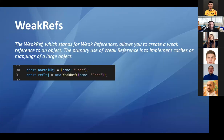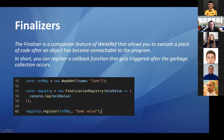FinalizationRegistry relates to WeakRef. You can register a finalization registry with a callback. You register an object with a weak reference plus some associated value, and the registry callback is triggered once the garbage collector has collected that object. As a recommendation, WeakRef can be used for caches or mapping objects — information you're completely sure you won't need in the future.